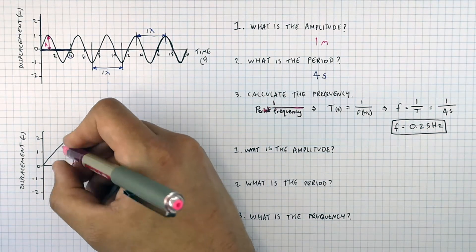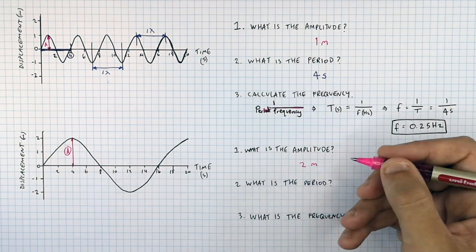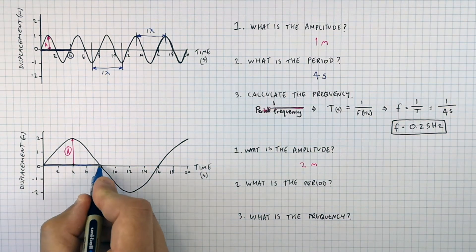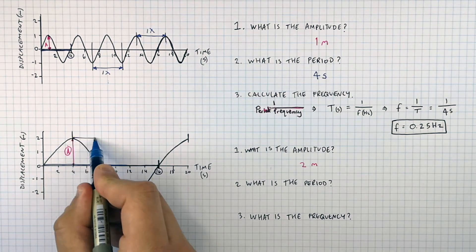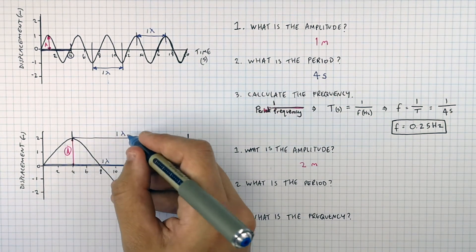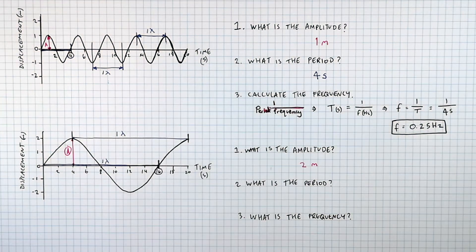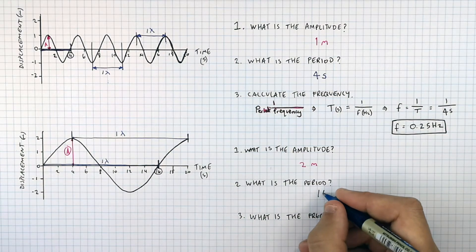So the amplitude of this wave is going to be two meters. And the period is going to be 16 seconds. Because 16 seconds is the time it took for one complete cycle of a wavelength to take place.